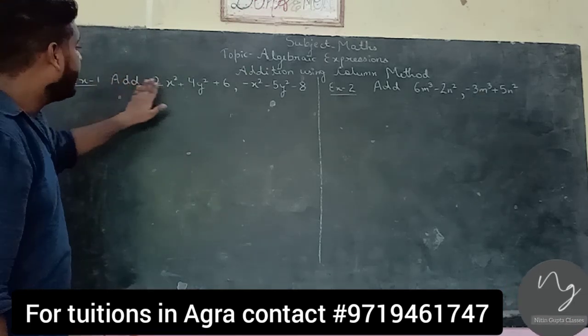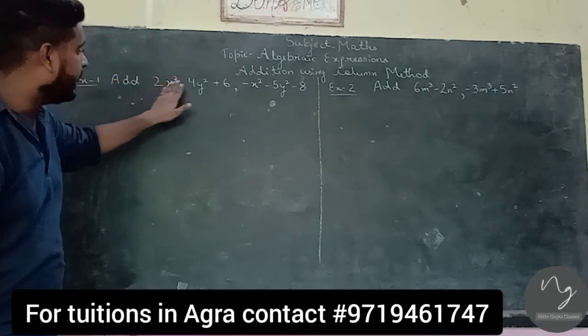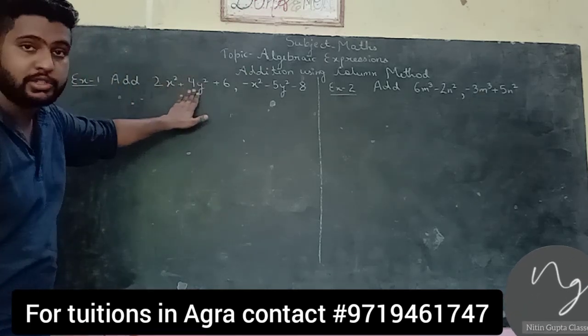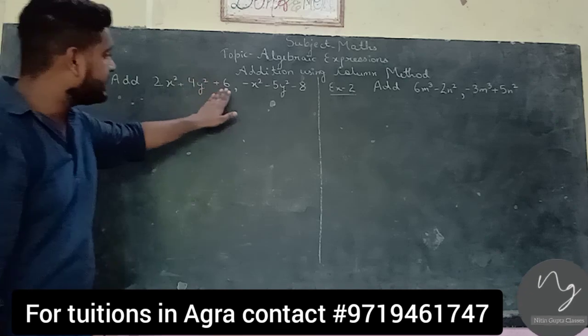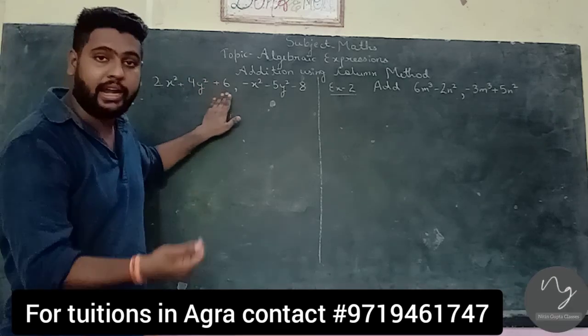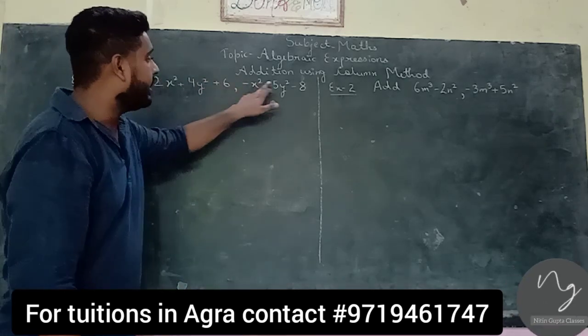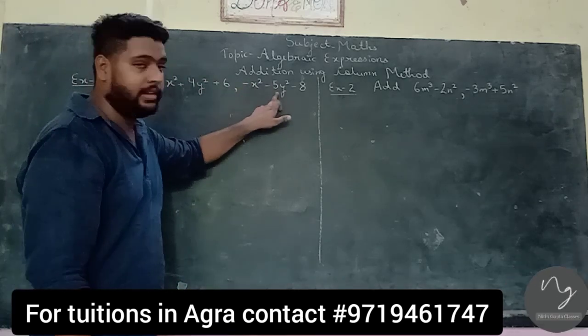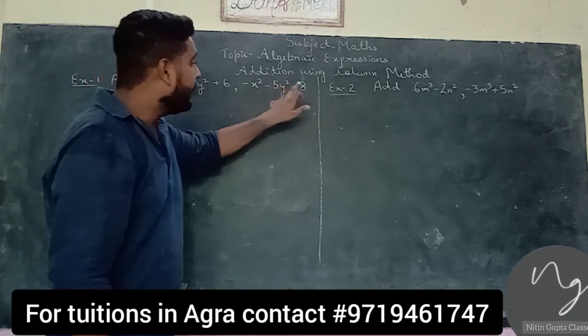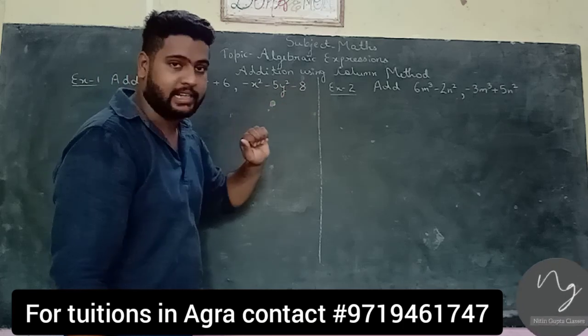We have 2x squared plus 4y squared plus 6, added to minus x squared minus 5y squared minus 8. Let's start.